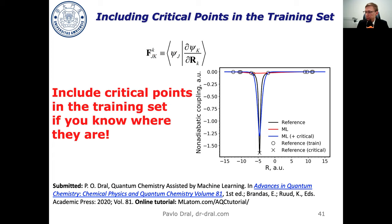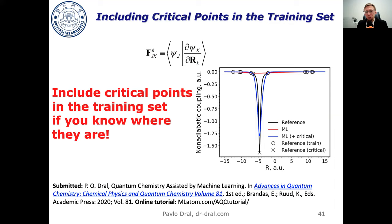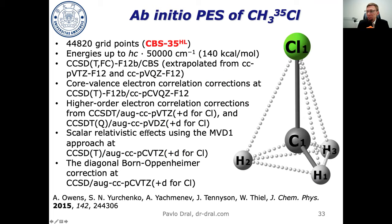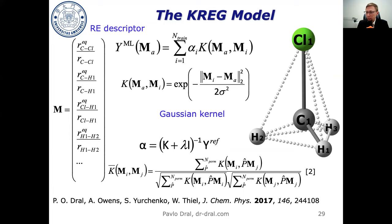Final question from Gabriel Schleder: did you test delta learning starting from a bad initial reference? Even in our original delta learning paper, using better baseline methods means you need fewer training points. A very bad method with nothing to do with the final accuracy might be worse than direct ML, but usually even poor semi-empirical methods still provide a good initial reference.